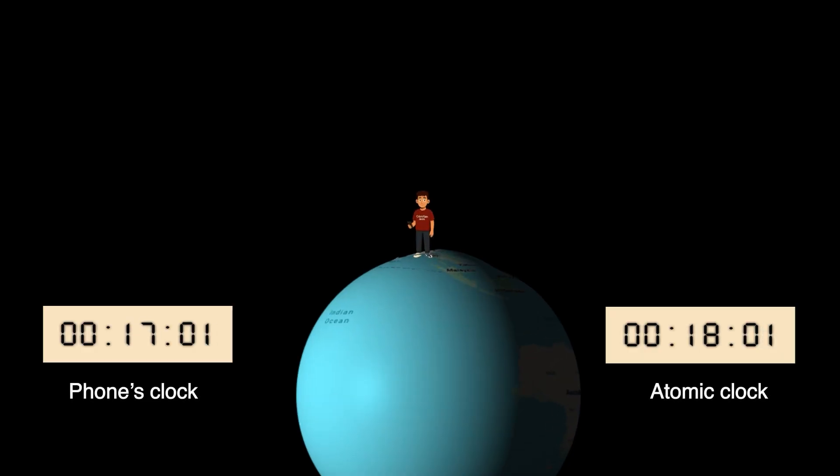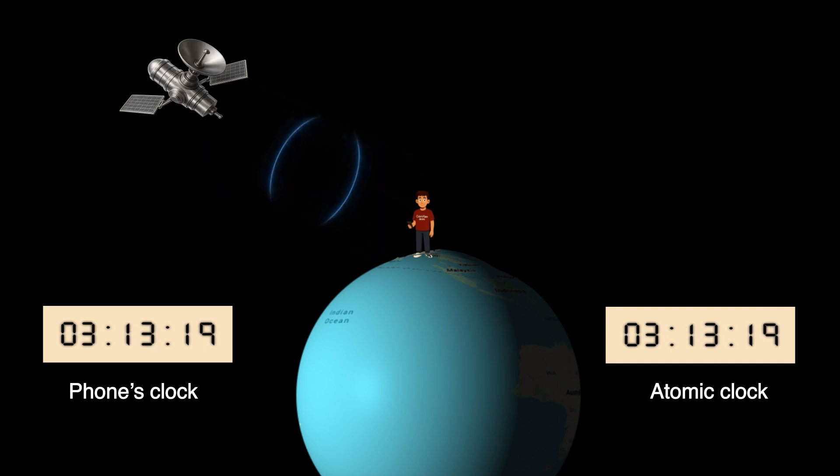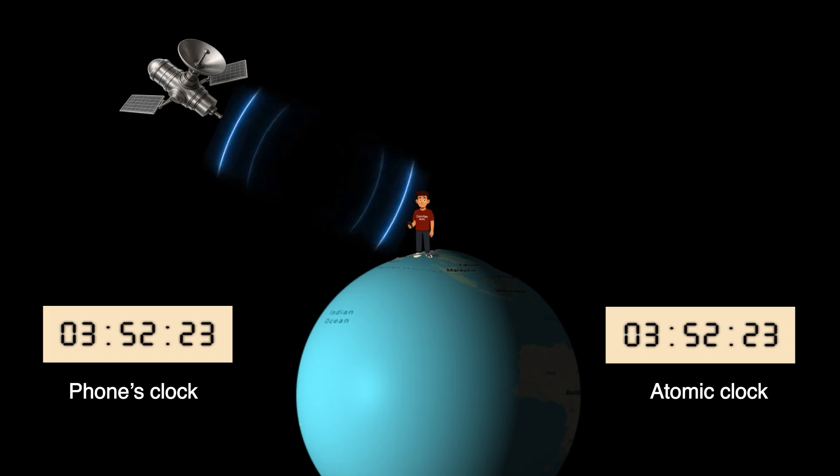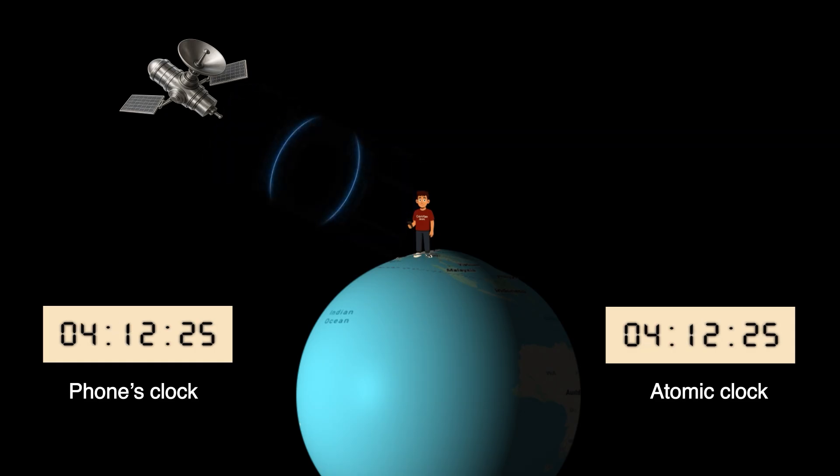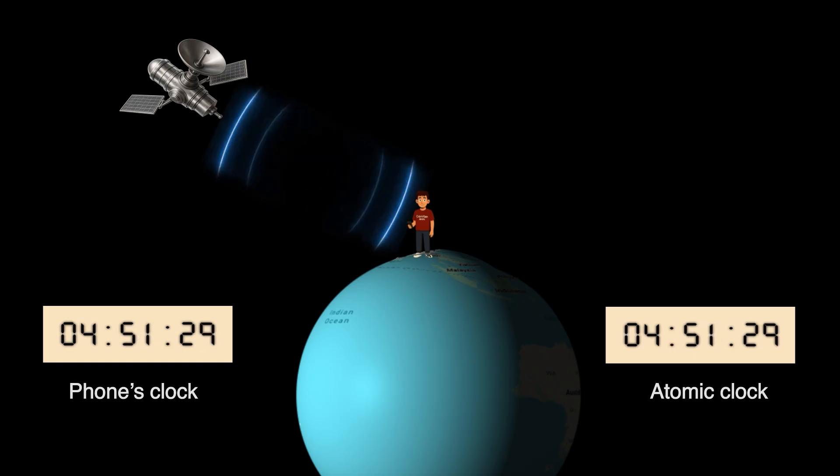Now here's the tricky part. My phone's clock is not perfectly accurate. Even a 1 millisecond difference means the satellite thinks I am about 300 km away from where I actually am because GPS signals travel at the speed of light. The fourth satellite's job is to fix that difference, syncing my phone's clock with its own atomic clock. Once the timing is perfect, the distances from the first three satellites are also perfect. And now my position is locked.